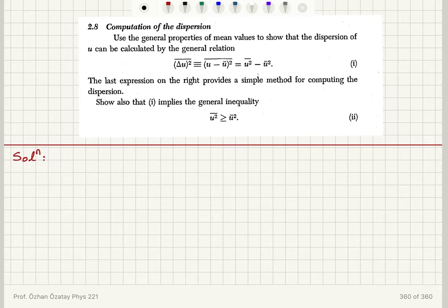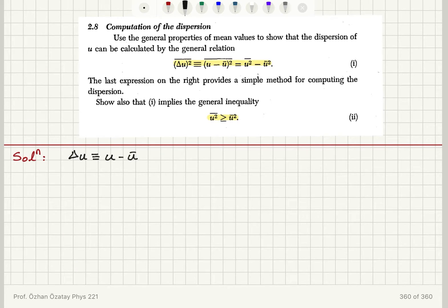So we're going to show two things here: the dispersion formula and the inequality. Let's start with the deviation from the mean. The deviation from the mean delta u is defined as u minus u bar. Now if I take the square of this, delta u squared, this would be u squared minus two u u bar plus u bar squared.